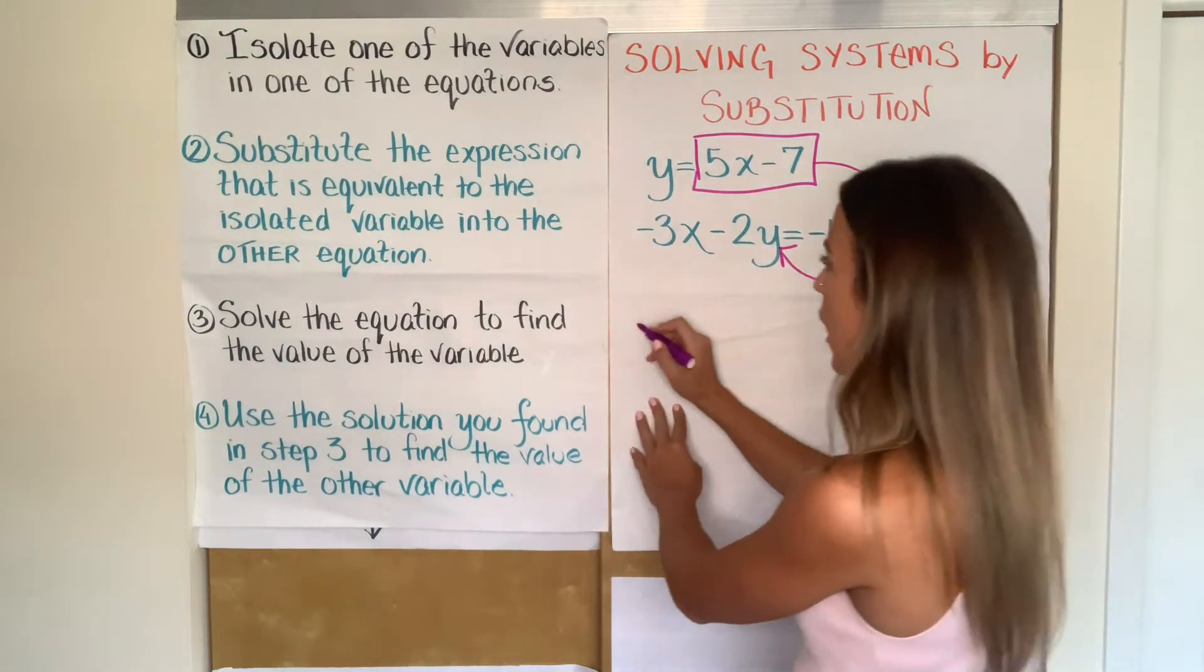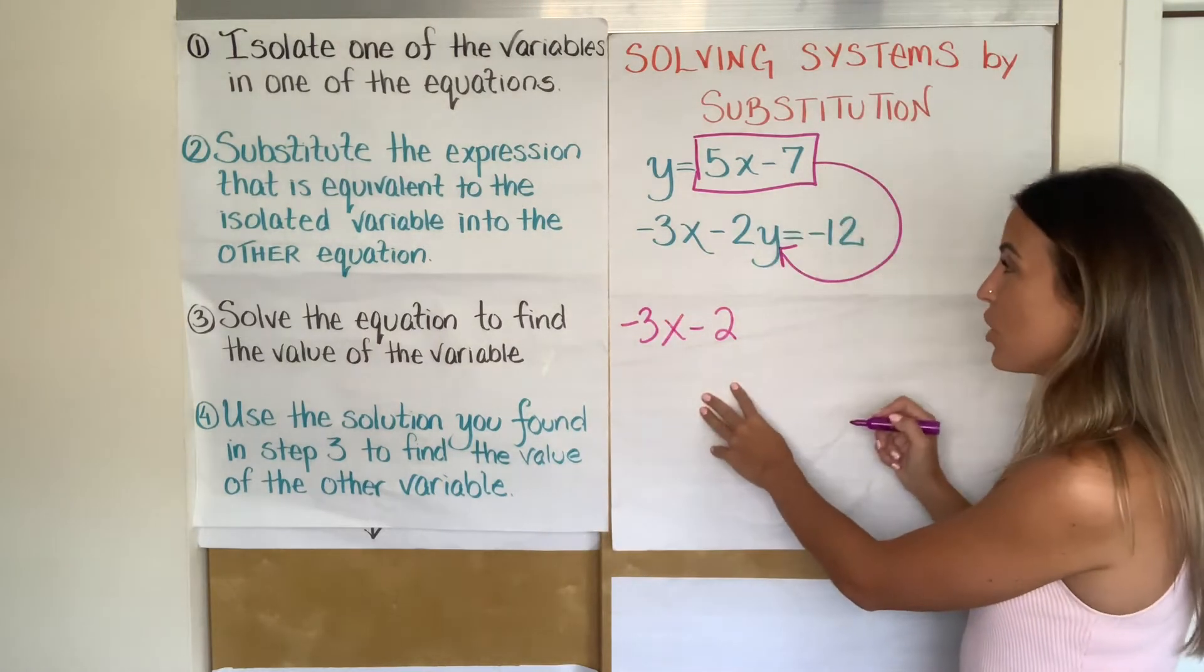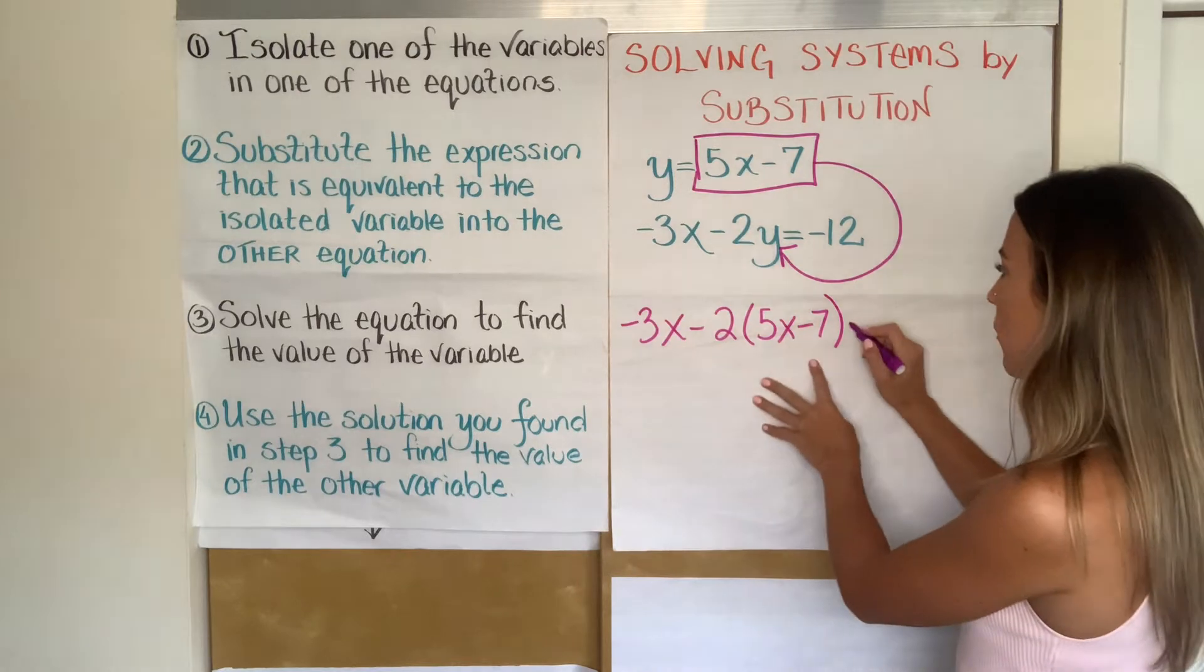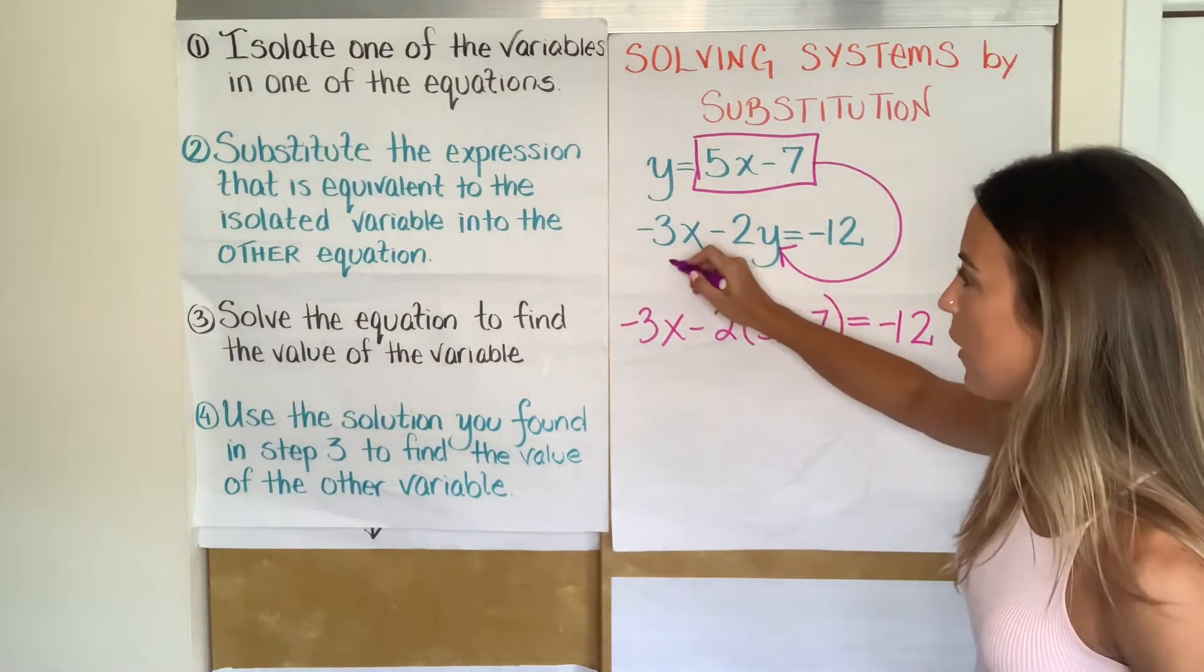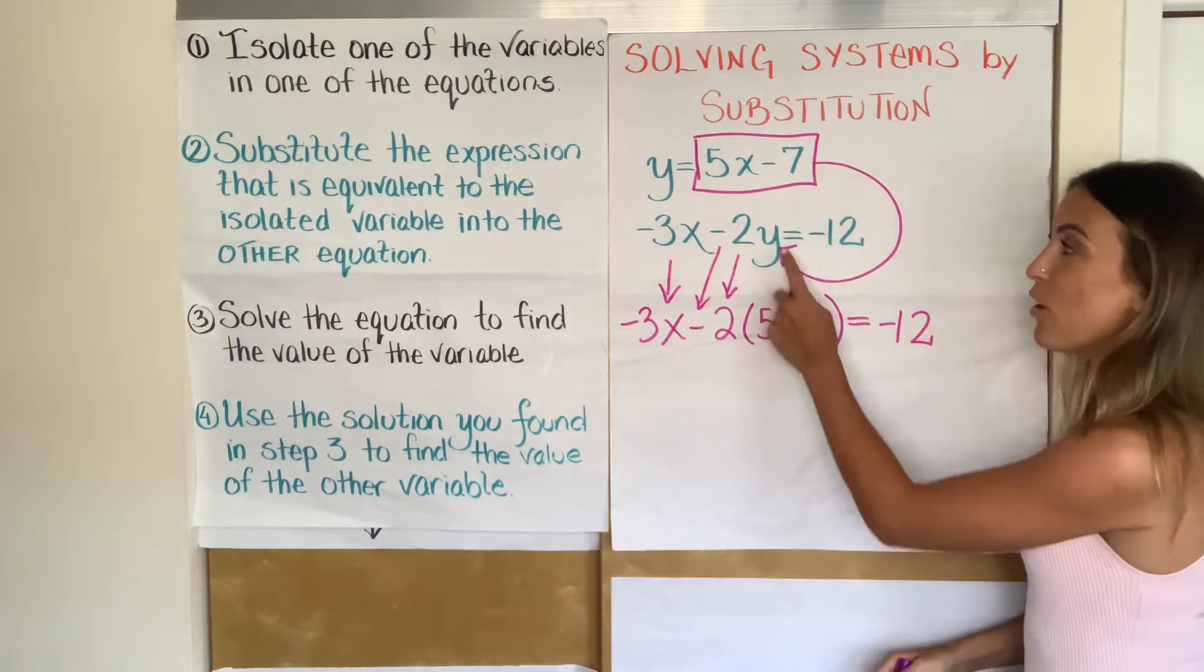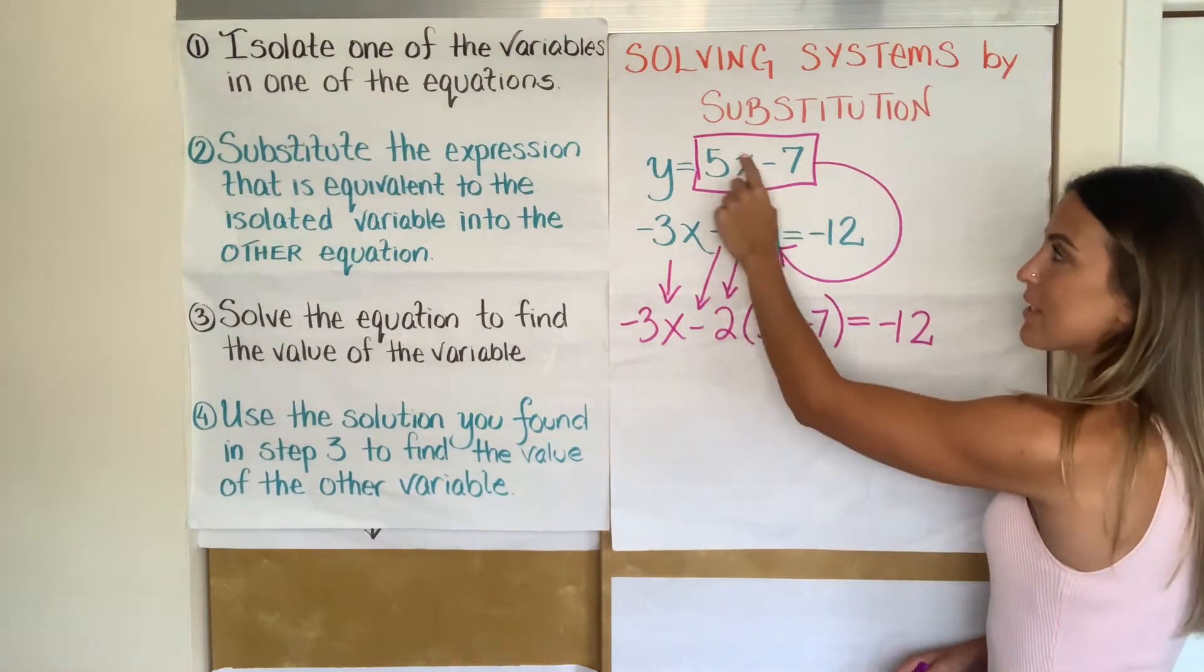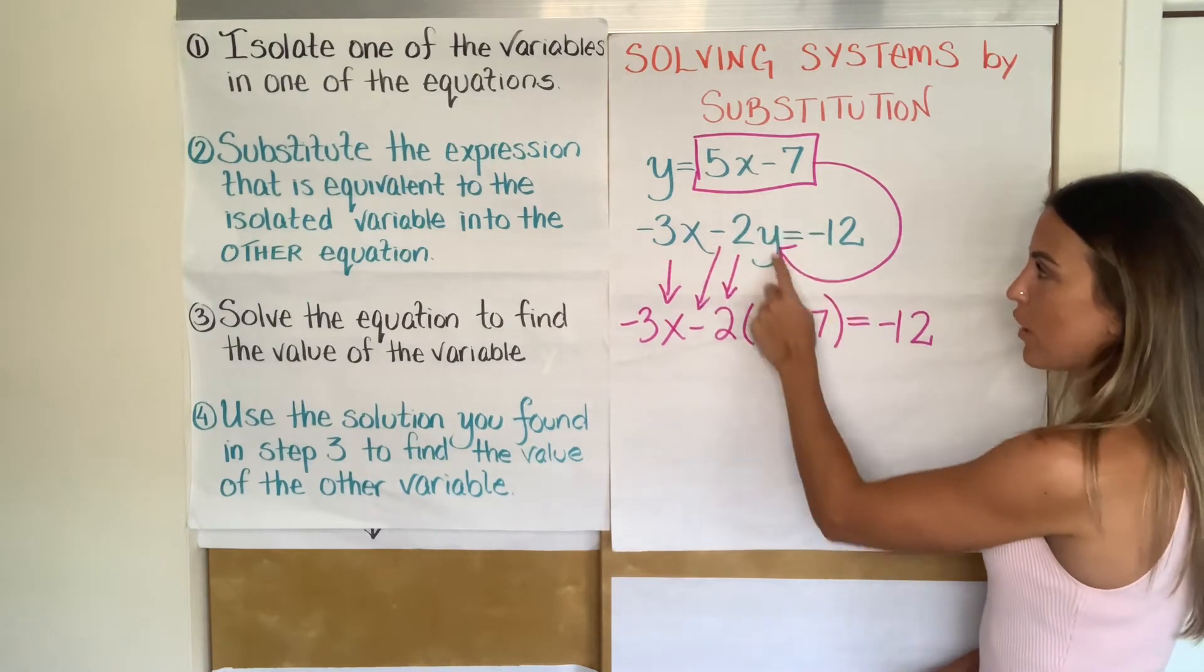That's what we're going to do. So I'm going to rewrite this bottom equation right now. Negative 3X minus 2, but now what I'm going to do is instead of writing Y, I'm going to write down in parentheses 5X minus 7. Everything else I'm going to keep continuing, equals negative 12. So take a look what I did. The negative 3X came down. The minus sign came down. The two came down. But now instead of writing Y, what I did was I substituted the expression that was equal to Y. 5X minus 7 is the same as Y.